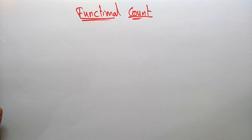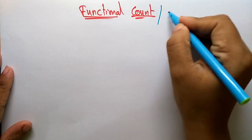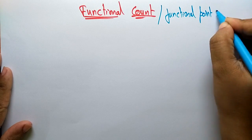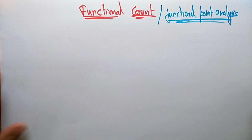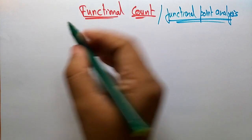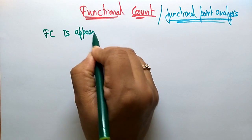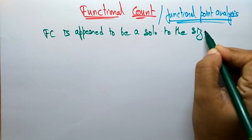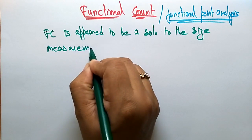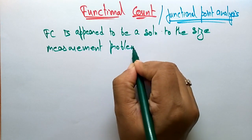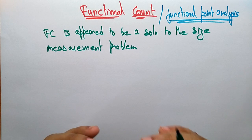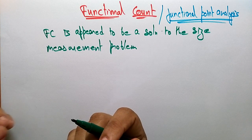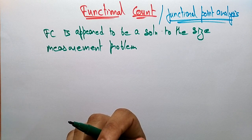Coming to the next topic, that is Functional Count, or you can call it Functional Point Analysis. So what is this Functional Point Analysis? The functional count appeared to be a solution to the size measurement problem. This functional count is one of the solutions for solving problems occurring while doing the size measurements of a program.